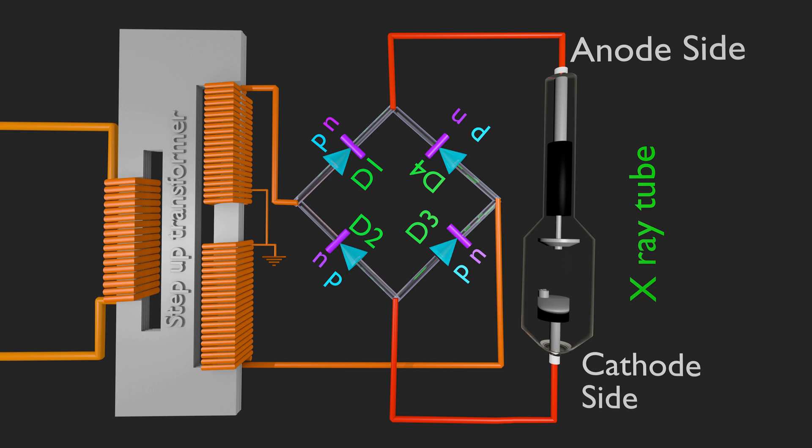Consider one half cycle of AC input when upper pole of secondary winding of transformer is positive in respect of lower pole. Here, diode 1 is forward biased as p side of it is connected to positive polarity. But diode 2 is reverse biased, as N side of it is connected to positive polarity. Hence D2 does not conduct. As D1 conducts, anode of X-ray tube gets positive polarity.